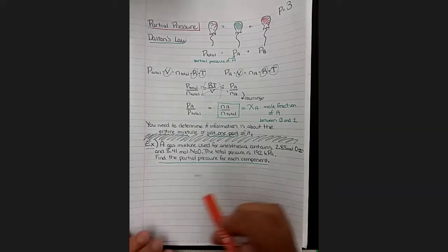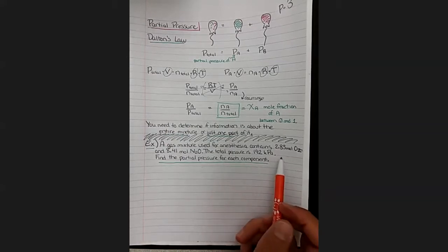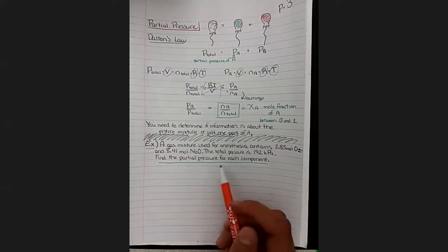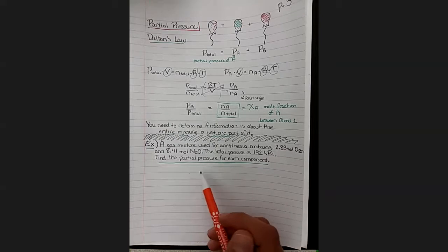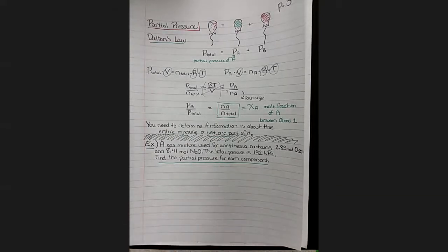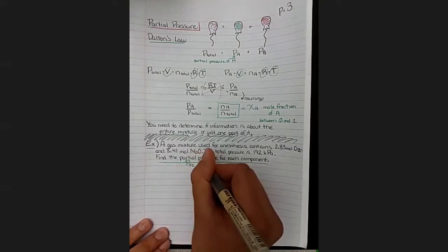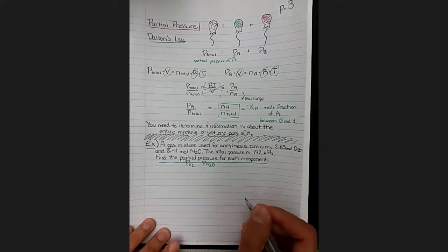Let's do this example that we have at the bottom. The example says gas mixture used for anesthesia contains 2.83 moles of oxygen O2 and 8.41 moles of nitrous oxide N2O. Total pressure is 192 kilopascals and we need to find the partial pressure for each component. So that's going to be pressure of O2 and pressure of N2O. Those are for individual parts that we need to find.